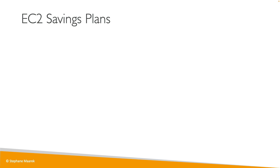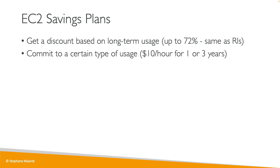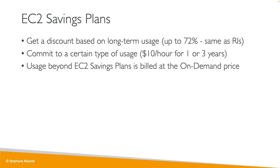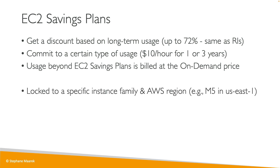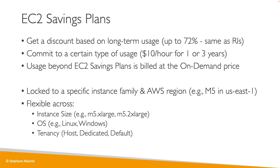Now for EC2 savings plans, you get a discount based on long-term usage — the same 70% as reserved instances. But instead of committing to a specific instance type, you commit to spending, say, $10 per hour for the next 1, 2, or 3 years. Any usage beyond the savings plan is billed at the on-demand price. With savings plans, you're locked to a specific instance family and region — for example, M5 in US-East-1 — but you're flexible across instance size, OS, and tenancy.